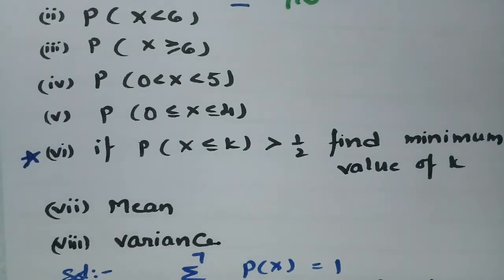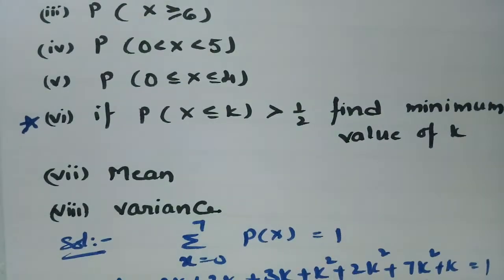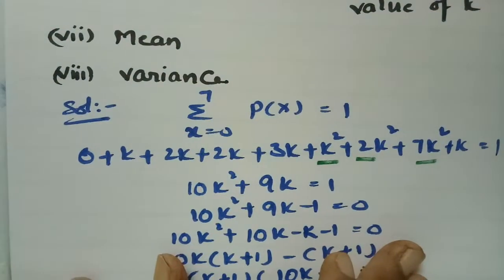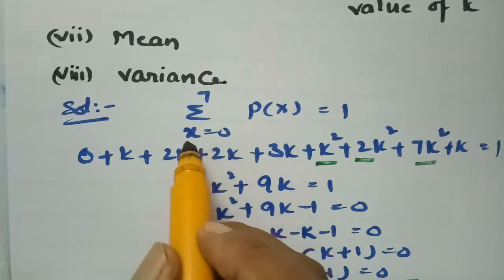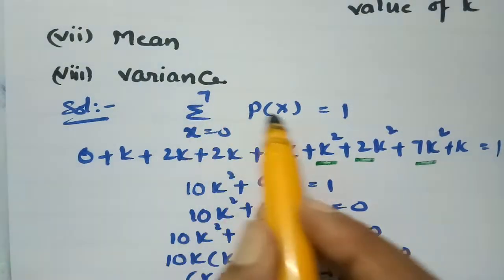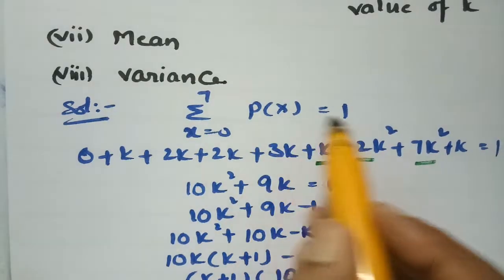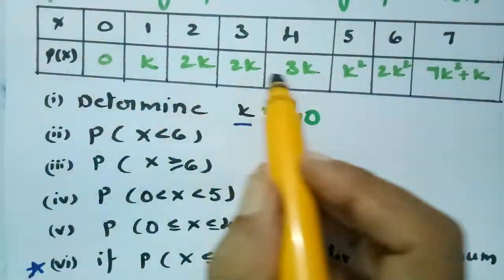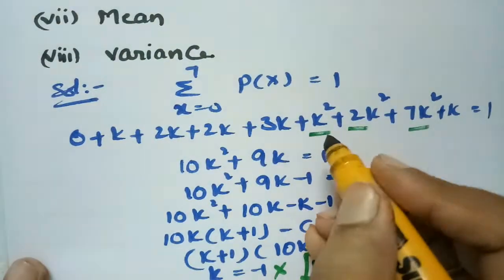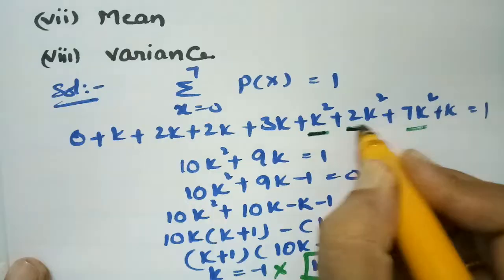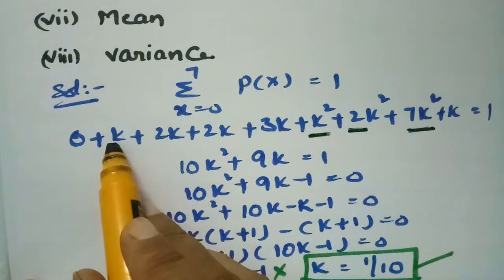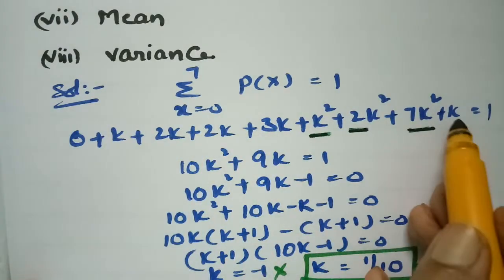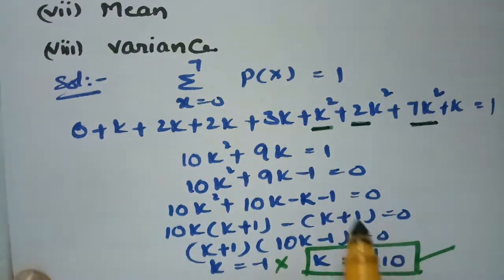The fundamental basic rule is that the total probability is always equal to 1. There are 8 terms here. That is the sum of P(X) from X=0 to 7 equals 1. After adding all values, the k² terms are 1 + 2 + 7 = 10k², and the k terms are 0 + k + 2k + 2k + 3k = 9k, equalling 9k. So 10k² + 9k = 1.